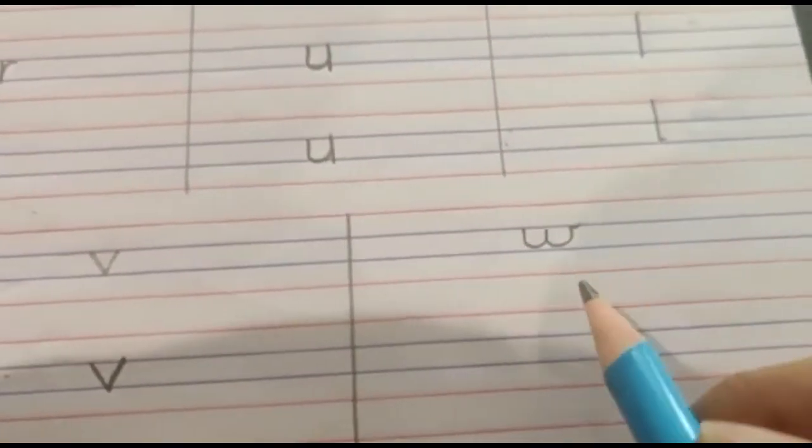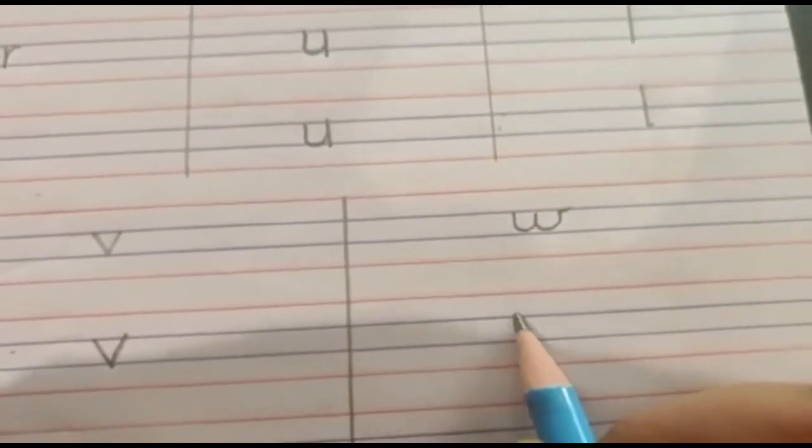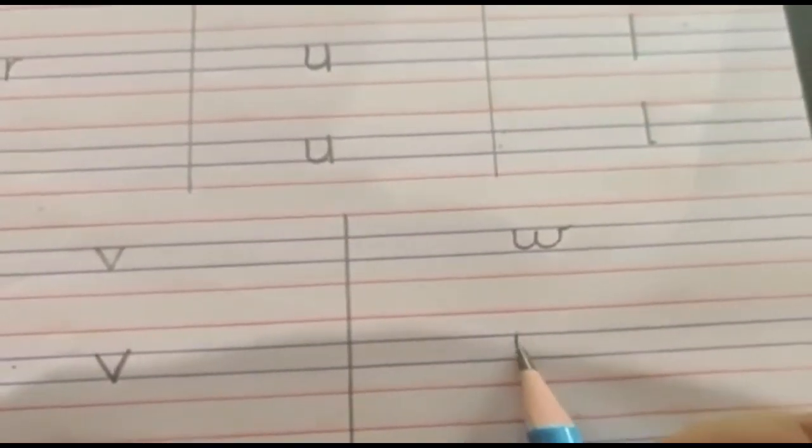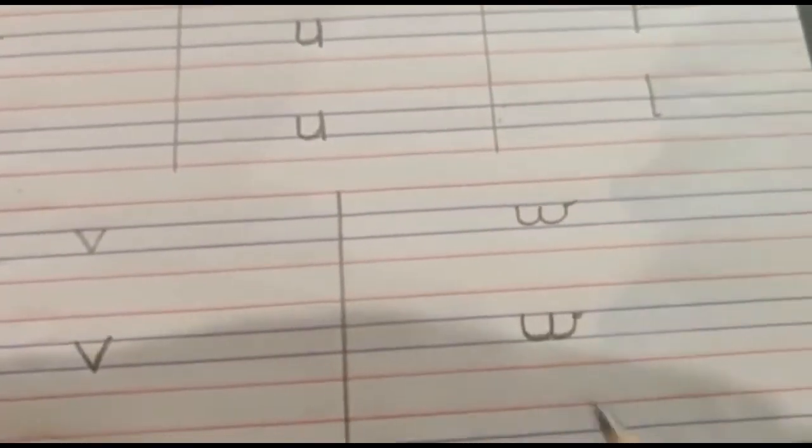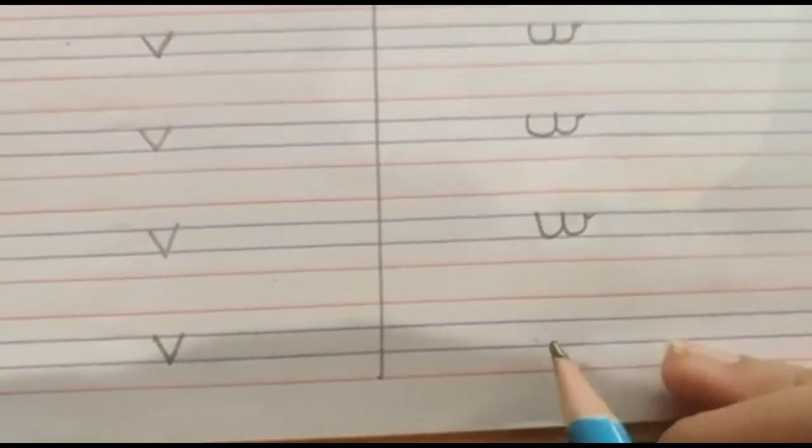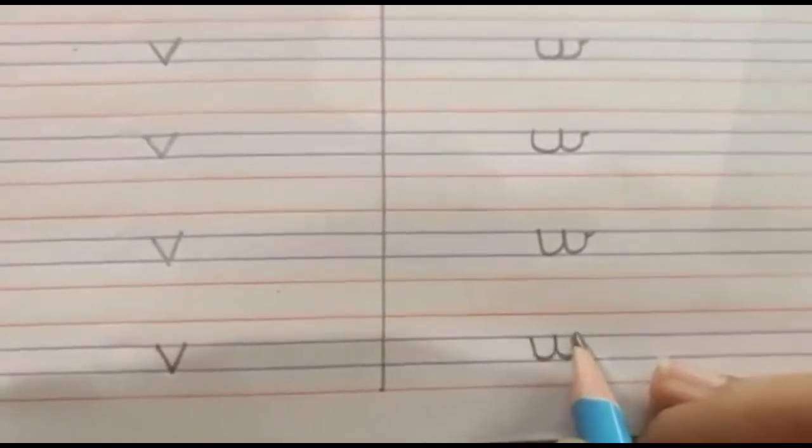And coming to W. Start from the blue line, go down, lumpity, another lumpity and a dash. Blue line to blue line then lumpity, lumpity like that. Lumpity, lumpity and tail. W says W. W says W.